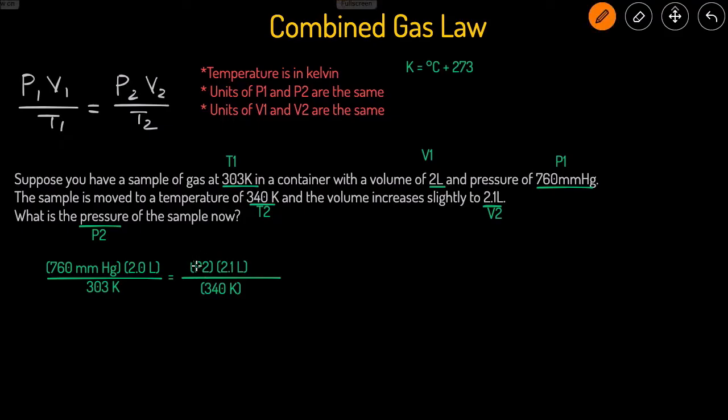Now it just becomes an algebra problem where we're isolating the pressure. When we have the variable on the top, we just have to get rid of the other two. If something's on the bottom, we can just cross multiply it and bring it to the top.